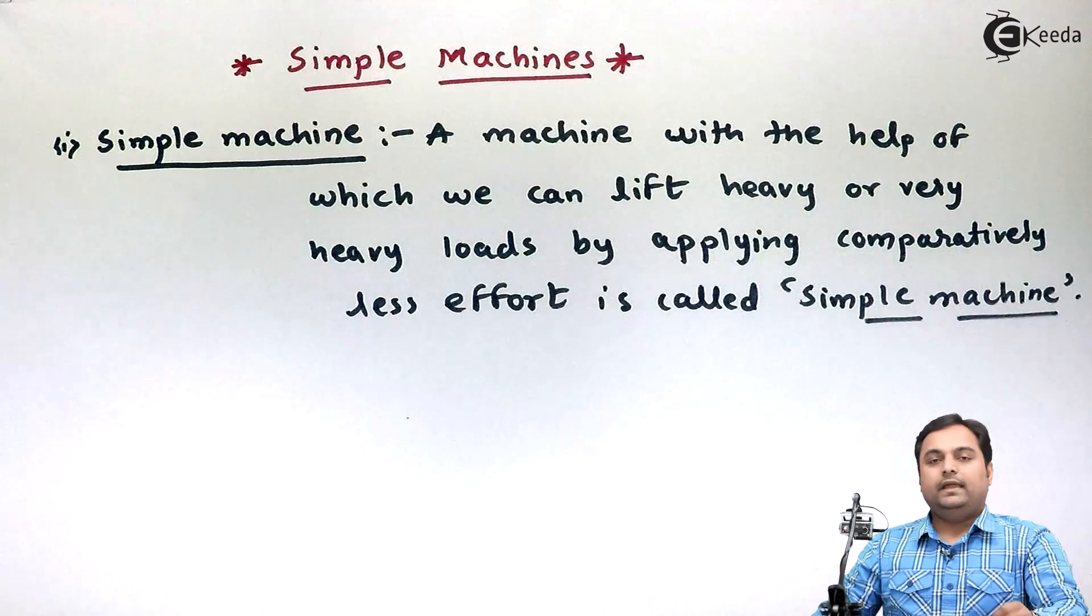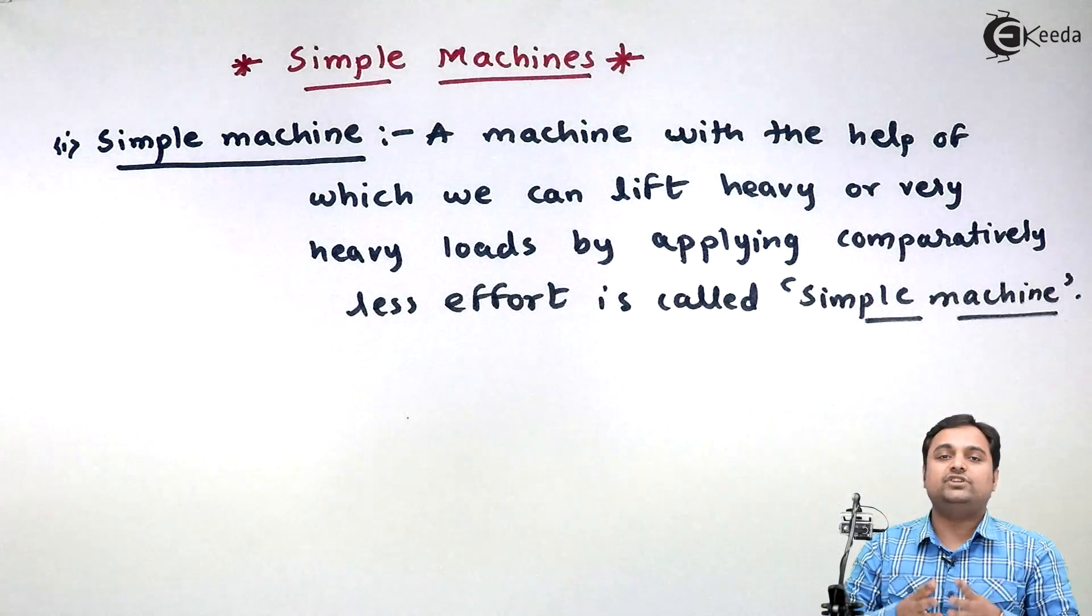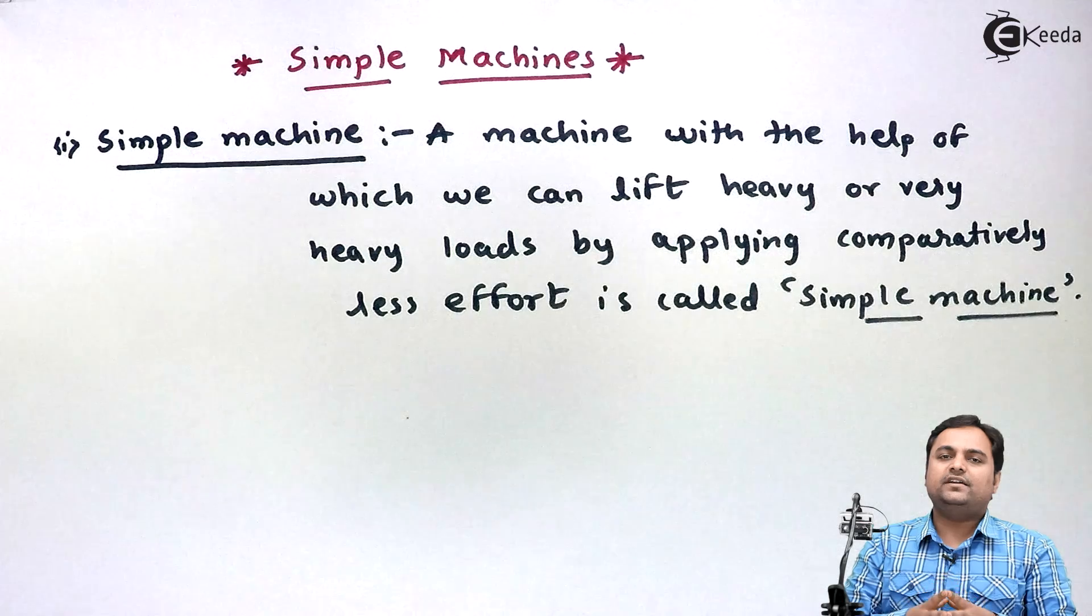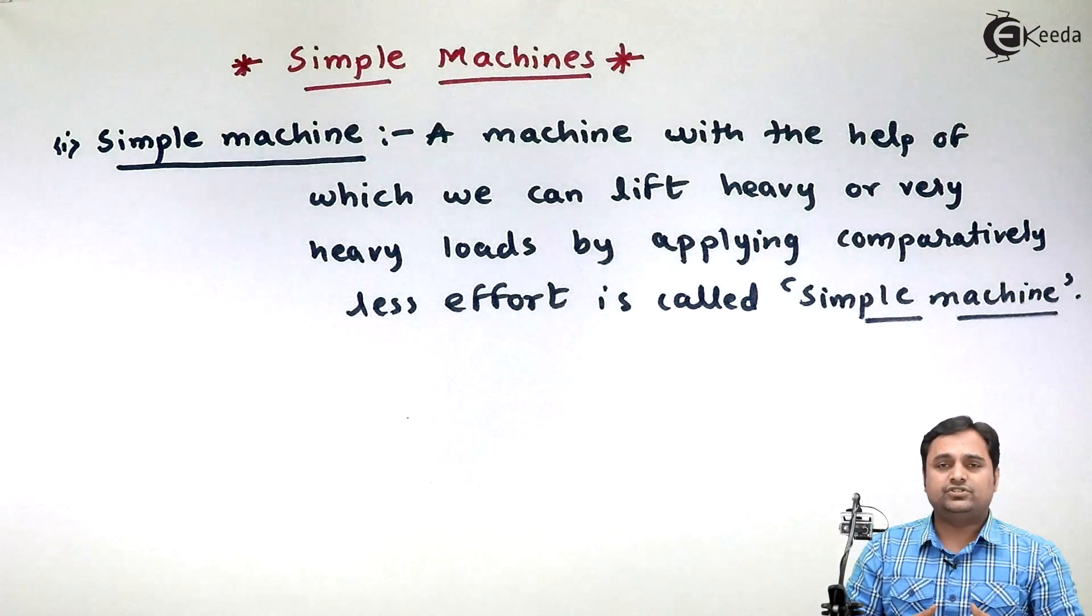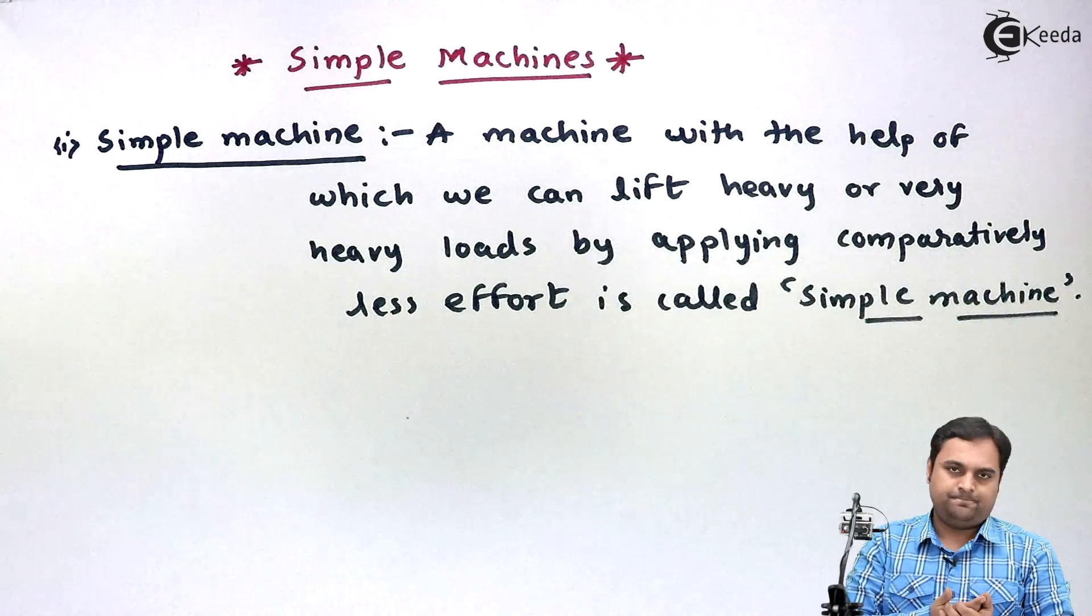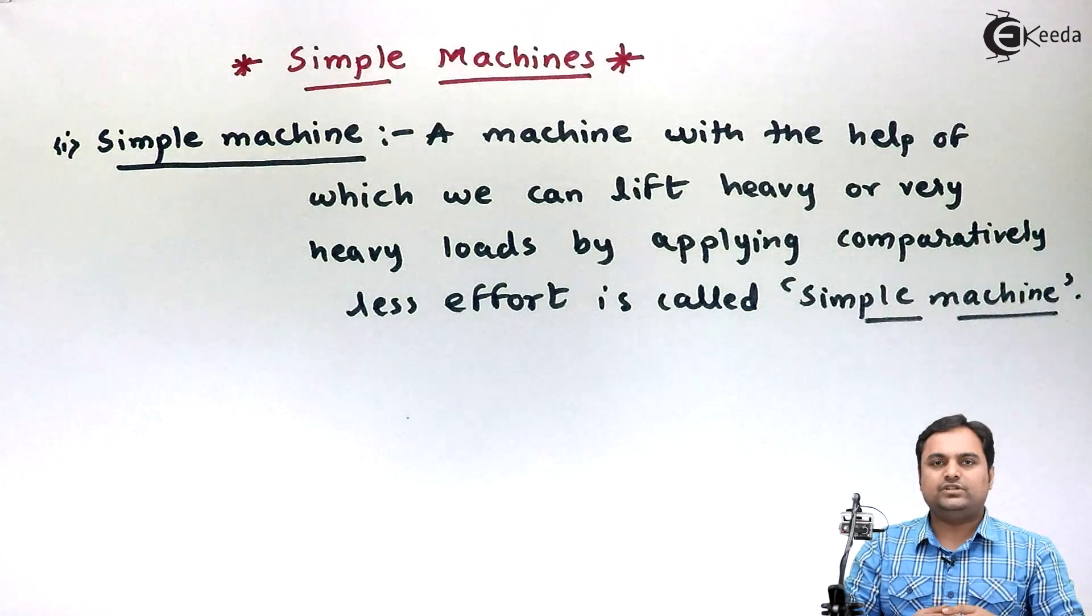In simple machine we can take the example of a screw jack. Screw jack is a machine which is used to lift heavy loads like it is used to lift a car.